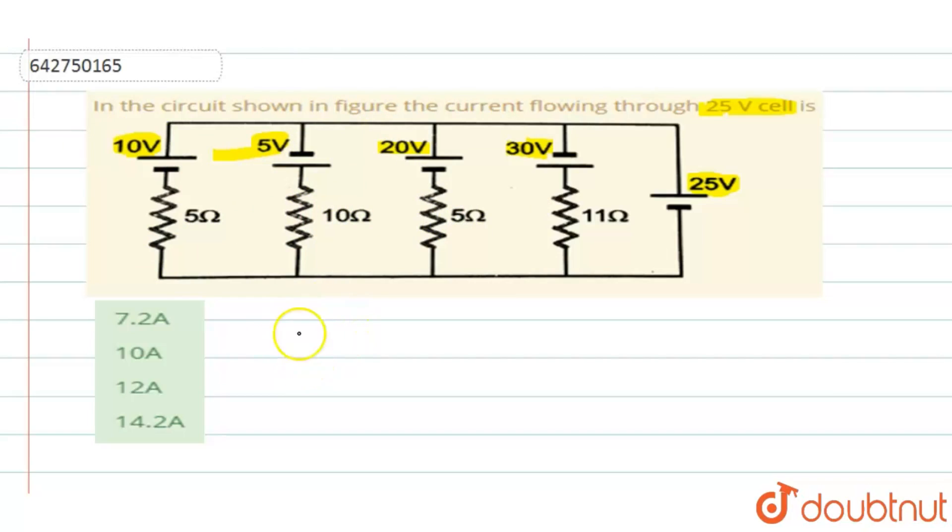So let us write all the values here. When the cells are connected in parallel, they have E1 as 10 volt, E2 as 5 volt, E3 with 20 volt and E4 with 30 volt. Now correspondingly, their internal resistances are R1 is 5 ohms, R2 is equal to 10 ohms, R3 is equal to 5 ohms and R4 is equal to 11 ohms. Now when 4 resistances are connected in parallel,